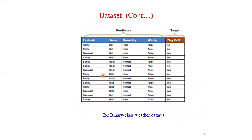Consider this weather data set example. If you observe the classes, there are only two classes: S and No. If there are only two classes present, then the classification performed on that data set is called binary classification. Also, the attribute you are going to predict is called the target attribute, and all the remaining attributes are referred to as predictors.